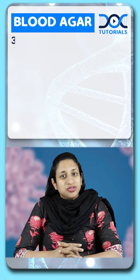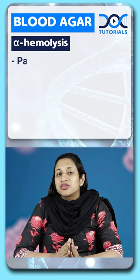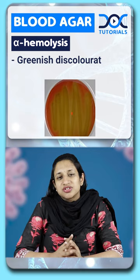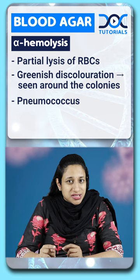There are three types of hemolysis: alpha hemolysis, beta hemolysis, and gamma hemolysis. Alpha hemolysis happens because of partial lysis of RBCs and can be appreciated in the form of green discoloration seen around the colonies. This is a typical description for pneumococcus, so always remember alpha hemolysis and the capsule are associated with Streptococcus pneumoniae.